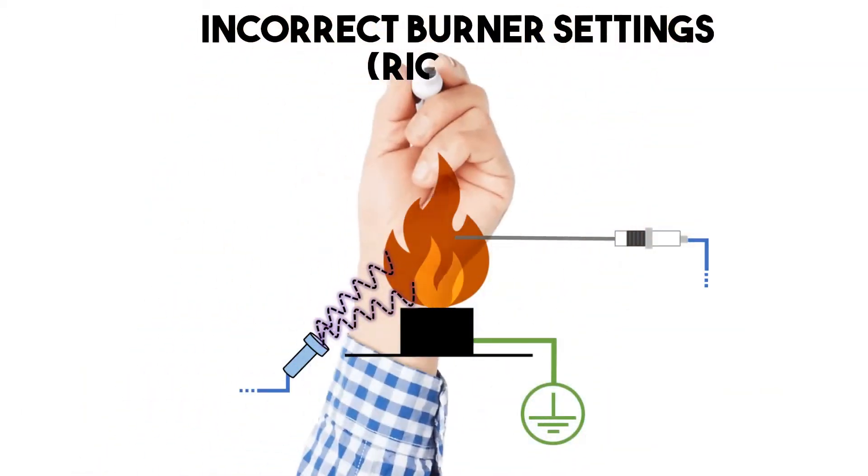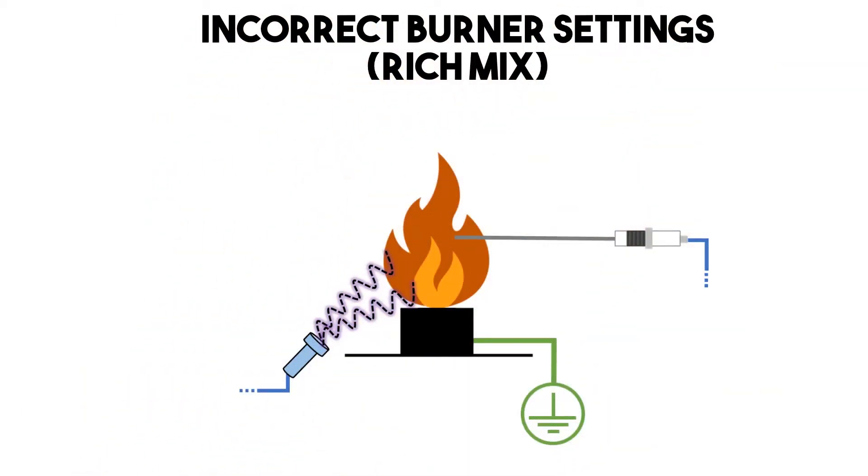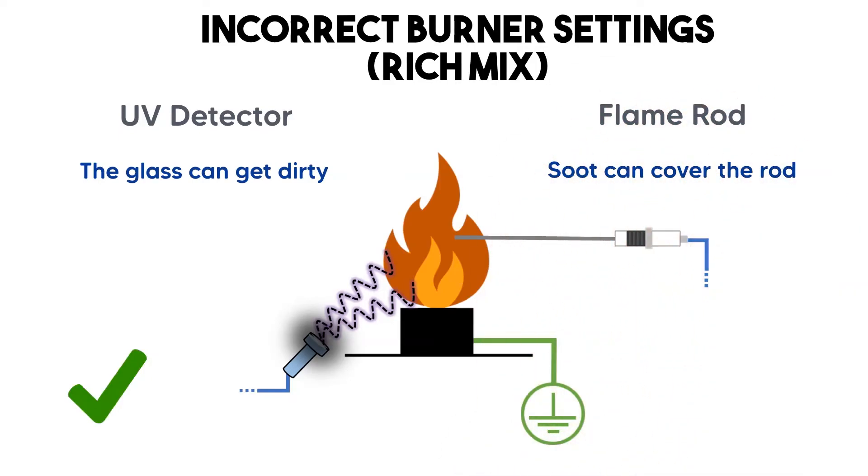Incorrect burner settings with a rich air gas mixture. The UV detector glass can get dirty with soot but it does not affect it significantly. For the flame rod the soot caused by carbon buildup can cover the rod resulting in a poor reading.